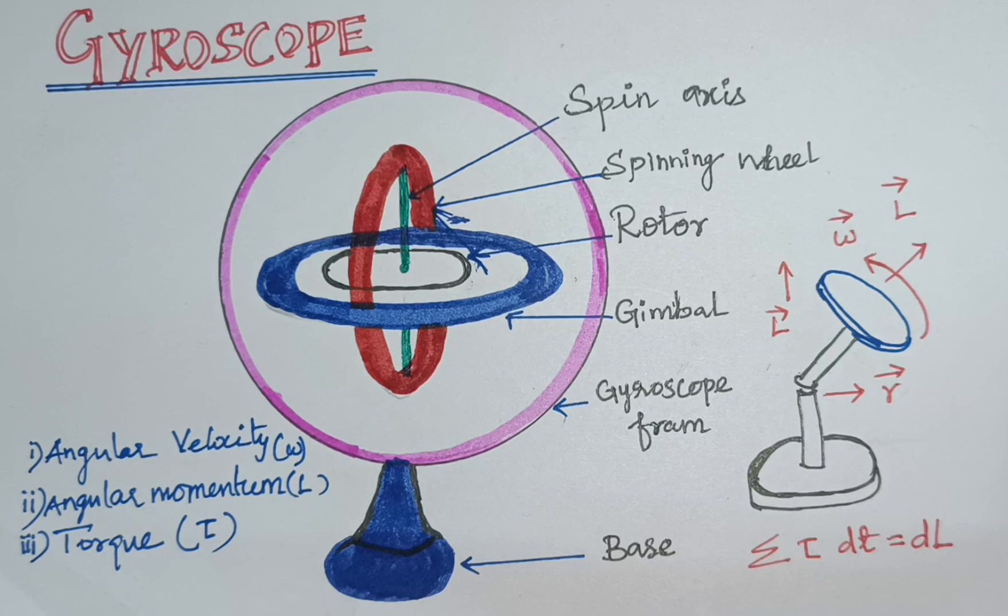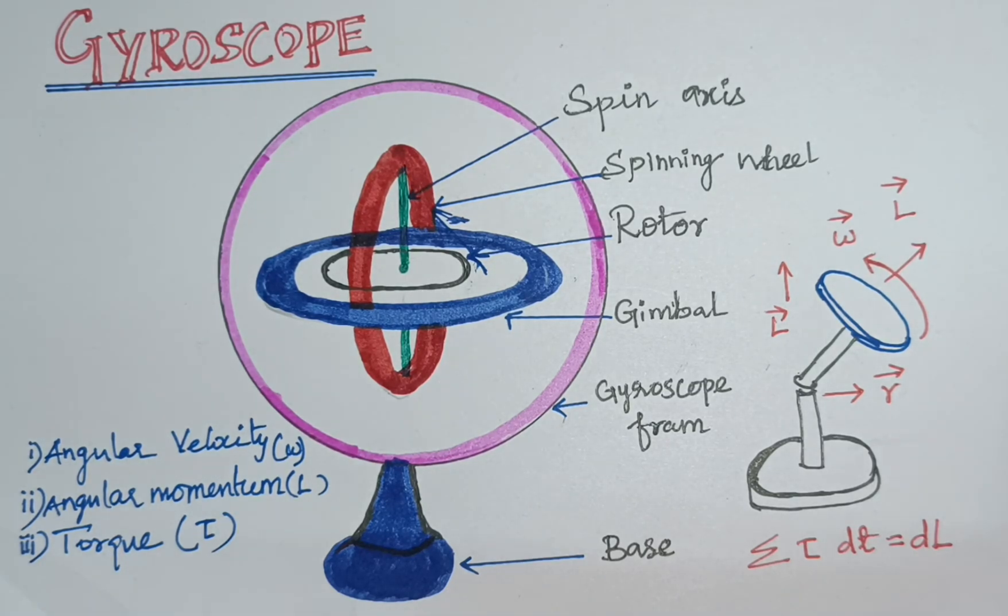First principle: the product of angular momentum which is experienced by the torque on the wheel is used to produce gyroscopic precision in the spinning wheel.